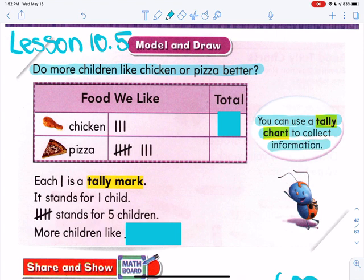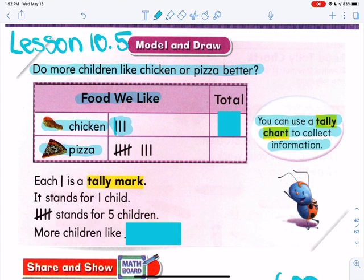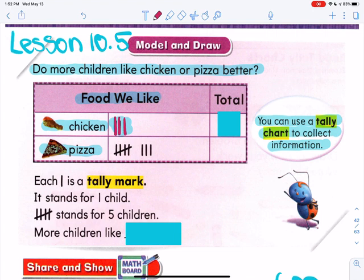Do more children like chicken or pizza better? And this ladybug at the bottom is saying you can use a tally chart to collect information. We need to read the titles and the labels. The chart title says 'food we like,' and there are two types of food: chicken and pizza. How many tally marks do you see by chicken? One, two, three — so there's three. Under the section that says total, we're going to write a three.